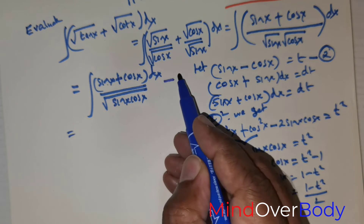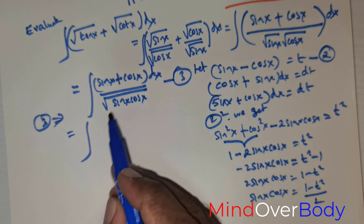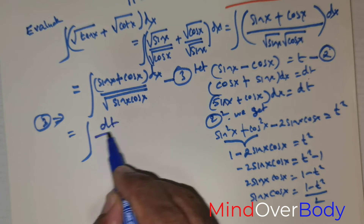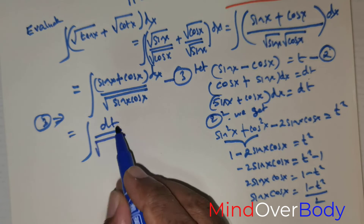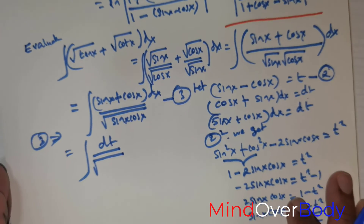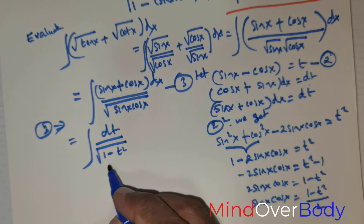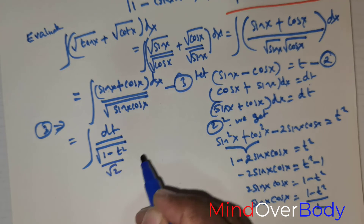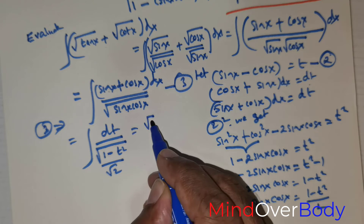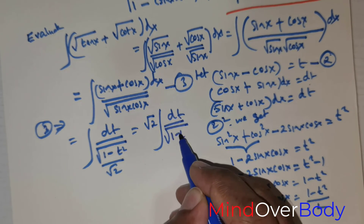The integral can now be rewritten: sin x + cos x dx becomes dt, and in place of sin x cos x we substitute (1 − t²)/2, so √(sin x cos x) = √((1 − t²)/2). We can pull the √2 to the numerator, giving √2 times the integral of dt over √(1 − t²).